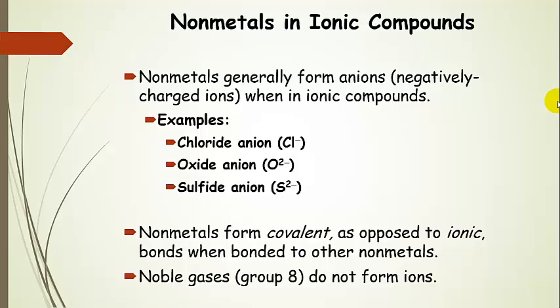Now nonmetals can also form covalent bonds, so they don't always form ions. But when they're in ionic compounds, nonmetals form anions. They have excess negative charge, they have excess electrons. A few examples: the chloride anion, Cl-.